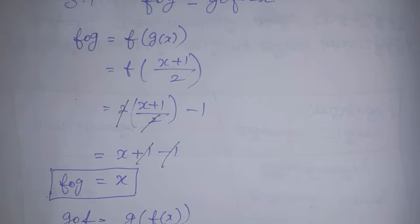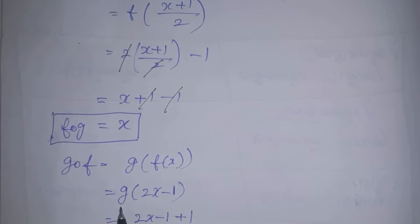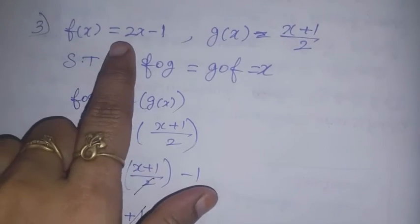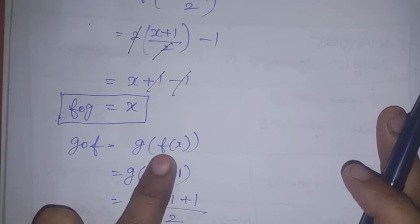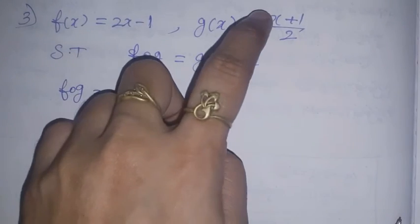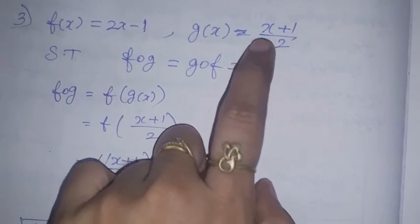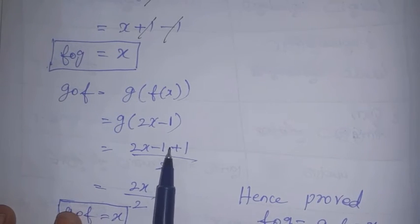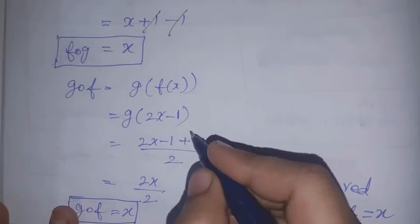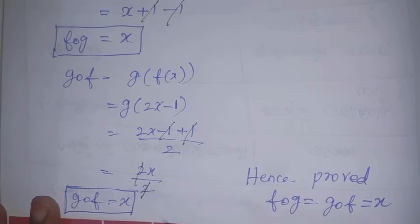Now g∘f = g of f(x) = g(2x - 1). Since g(x) = (x + 1)/2, we replace x with (2x - 1): (2x - 1 + 1)/2. The -1 and +1 cancel, leaving 2x/2. The 2s cancel, so g∘f = x.